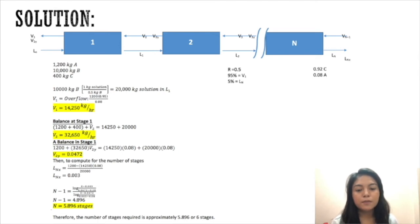From the data given we can solve the mass for the underflow L₁ by multiplying the mass of the inert solids by the kilogram solution per 0.5 kilograms of inert solids, and we get 20,000 kilogram solution in the underflow stream. For the overflow, we multiply the kilograms of copper sulfate by its composition 0.95 divided by 0.08, which is its composition in the exit. We get a flow rate of 14,250 kilograms per hour in the overflow.